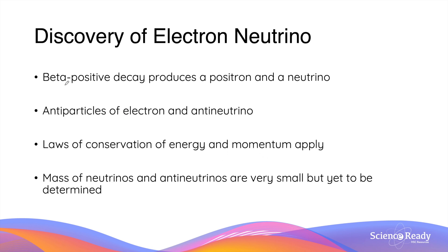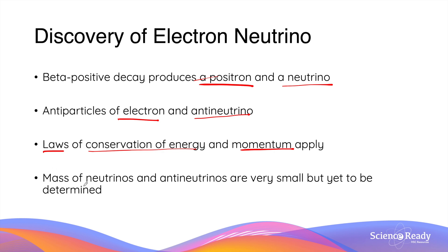Similarly, beta-plus decay also produces two particles in addition to the daughter nucleus: a positron and a neutrino, which are the anti-particles of the electron and the anti-neutrino respectively. The laws of conservation of energy and momentum apply equally in beta-plus decay as in beta-minus decay. Interestingly, the masses of neutrinos and anti-neutrinos are so small that the exact values have not yet been confirmed.